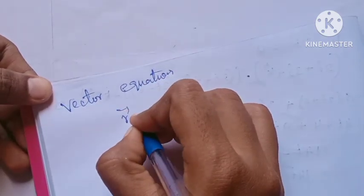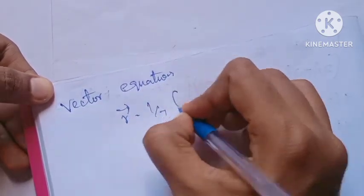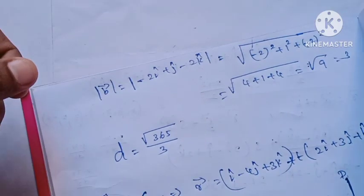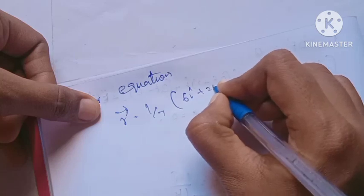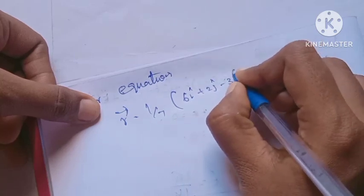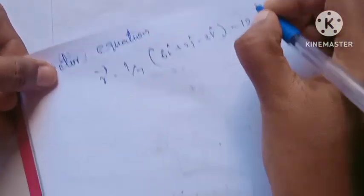Vector equation: R vector dot 1 by 7 into (6i+2j-3k) is equal to 12.